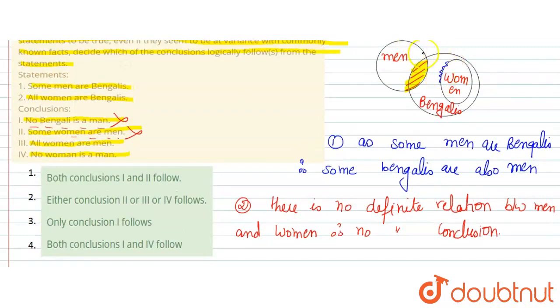Look, this is the woman's boundary, this is the man's boundary. These two sets are not touching, not overlapping, not intersecting. So there is no definite relation between them.